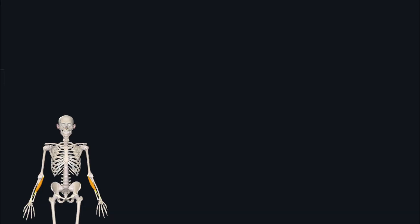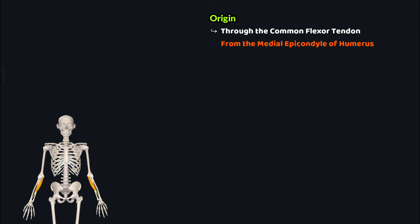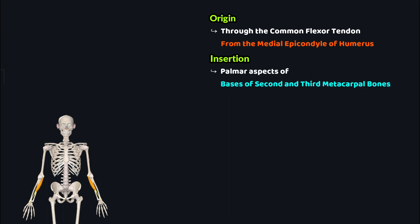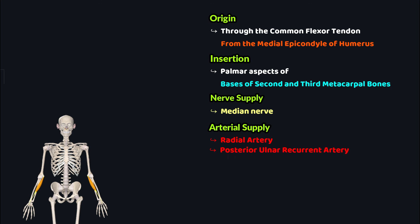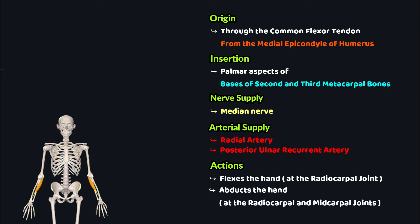Let's review all the points we studied about the flexor carpi radialis muscle. This muscle originates through the common flexor tendon from the medial epicondyle of the humerus. It inserts onto the palmar aspects of the bases of the second and third metacarpal bones. It receives its nerve supply from the median nerve. Its arterial supply comes from the radial artery and the posterior ulnar recurrent artery. This muscle performs two actions: flexion of the hand at the radiocarpal joint, and abduction of the hand at the radiocarpal and midcarpal joints.